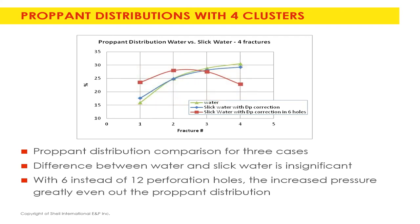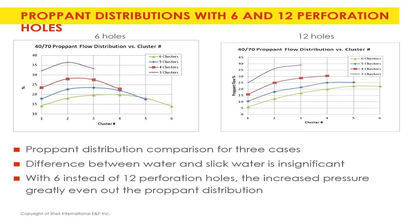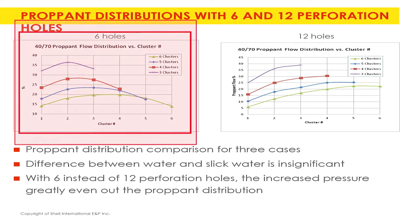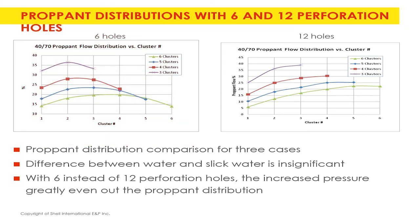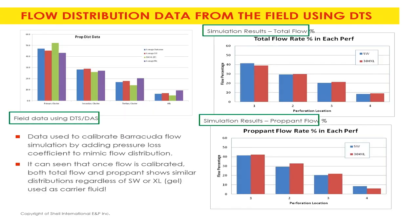The comparison shows that at four fractures you get the most even solid concentration distribution - slightly higher at two and three, but on average almost flat. This tells us what kind of perforation procedure we should follow. With six holes versus twelve holes per cluster, fewer holes gives a more even distribution, but at the cost of higher pump pressure. Eventually you can achieve a very uniform proppant distribution across the different stages.